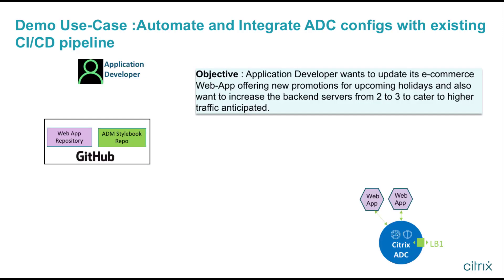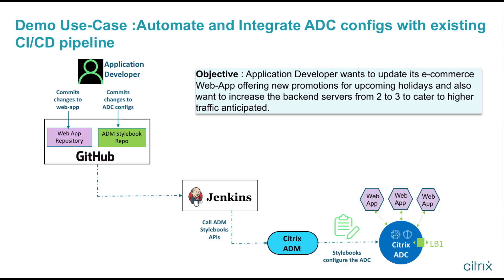Moving on to the demo, here's a quick illustration of the use case where an application developer wants to update and increase WAF backend servers from 2 to 3 to handle high traffic. We'll see how Jenkins, GitHub, and ADM can be integrated so that ADC can get configured as part of the CI-CD pipeline.